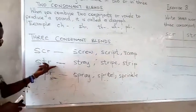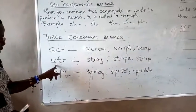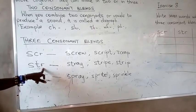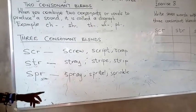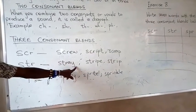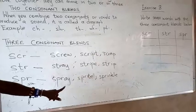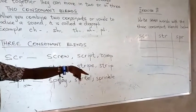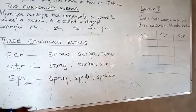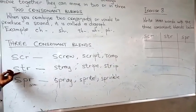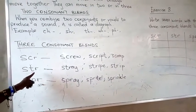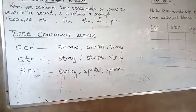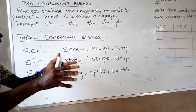Now let us look at the STR blend. STR, as in 'strip' and 'stripe.' The STR letters are one family which always moves together.